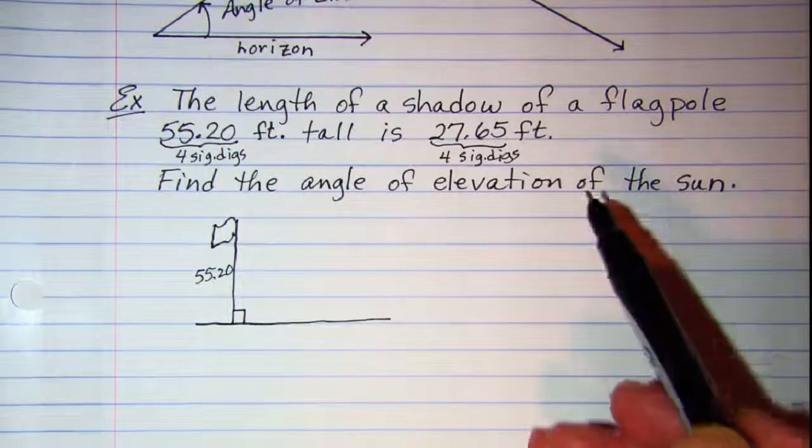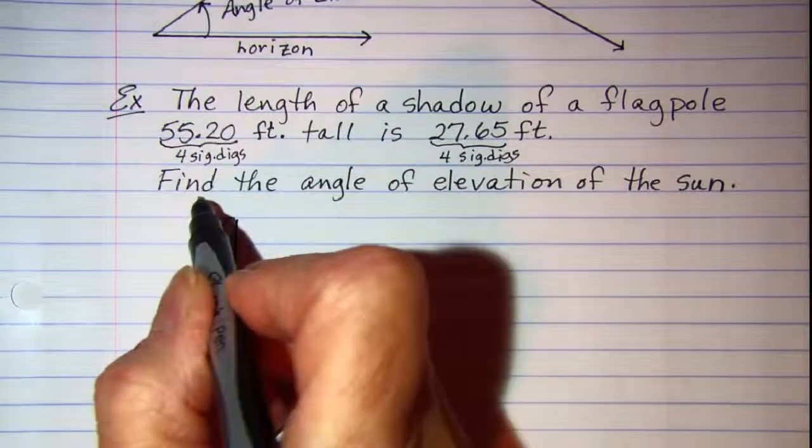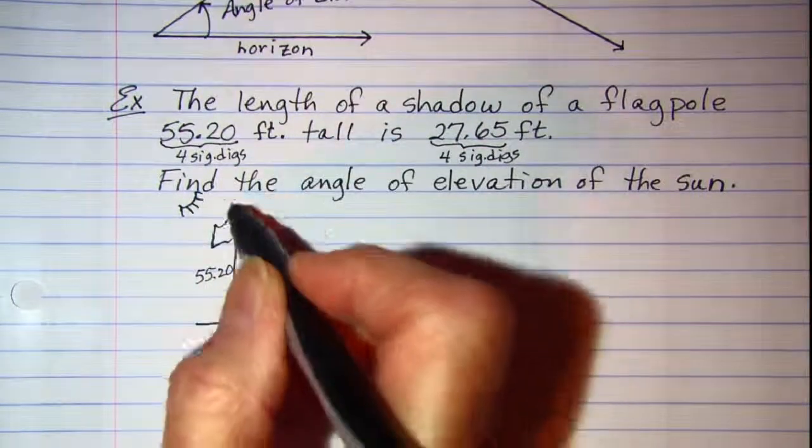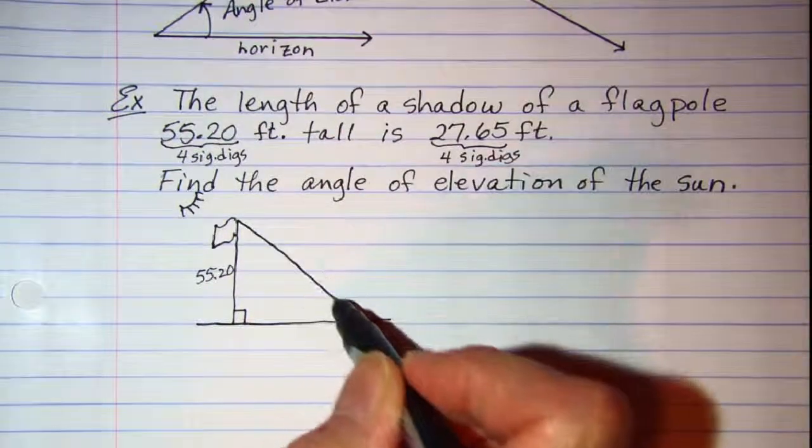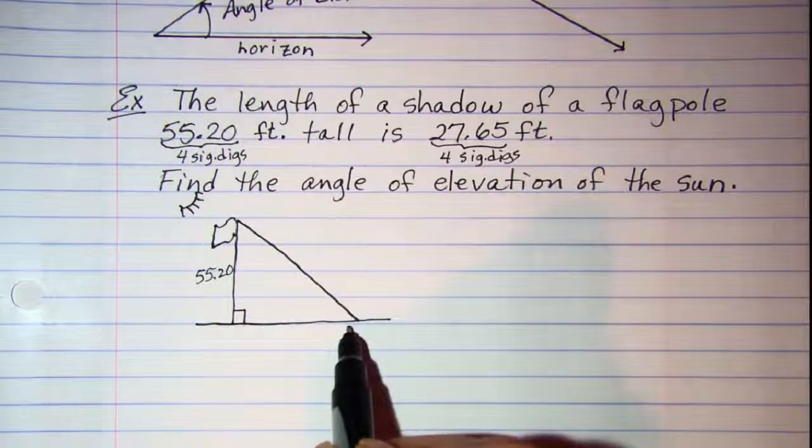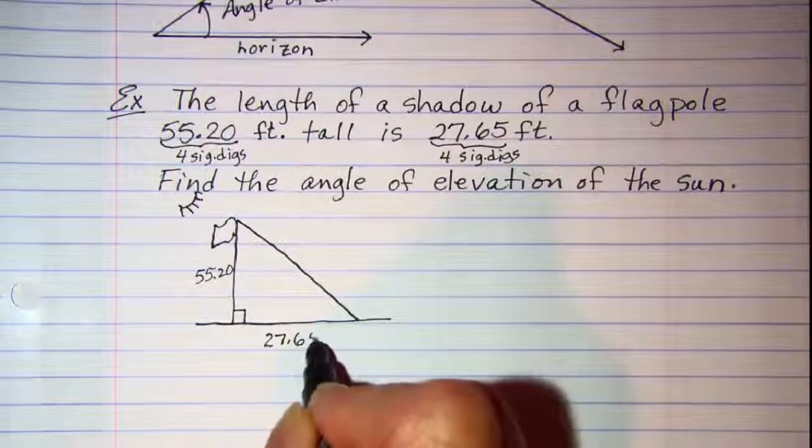And we have shadow. So let's put our sun right up here. And the rays of the sun is coming down to make a shadow on the ground. That's 27.65 feet.